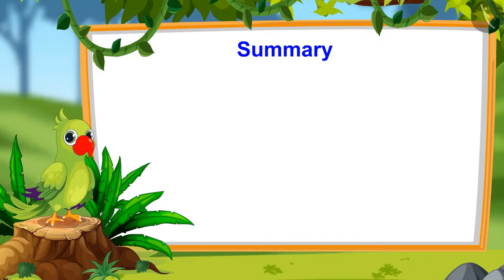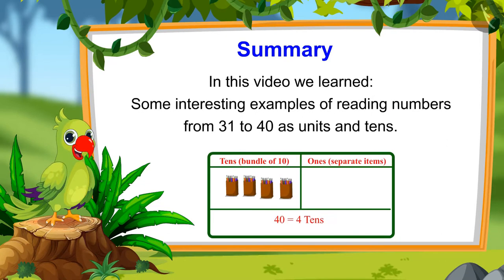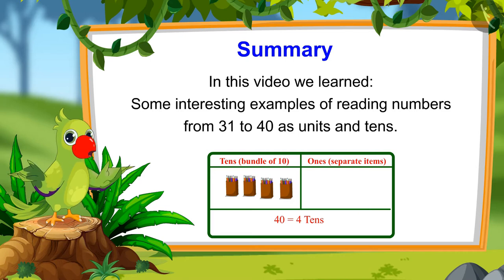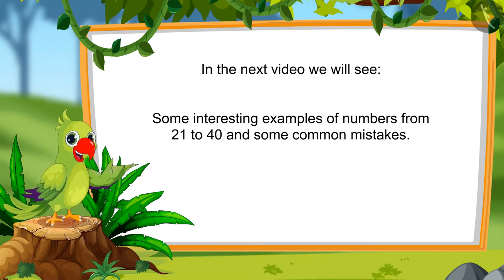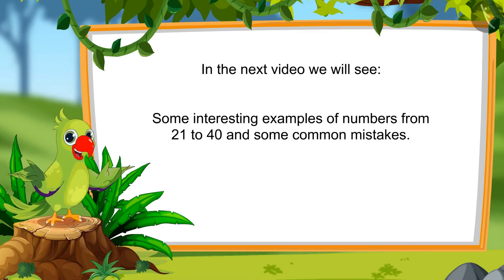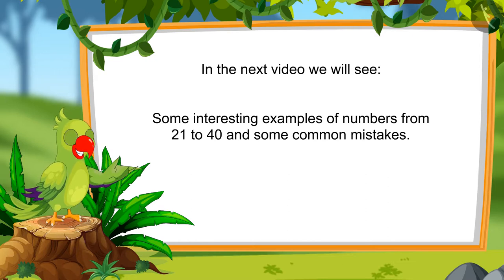So children, that was all for today. In this video, we saw numbers from 21 to 40 and some interesting examples of reading those numbers as units and tens. In the next video, we will see some interesting examples of numbers from 21 to 40 and learn about some common mistakes which should not be done. Till then, goodbye, friends!